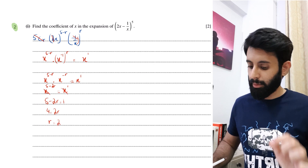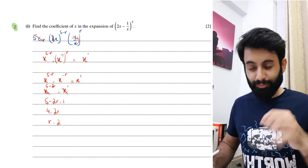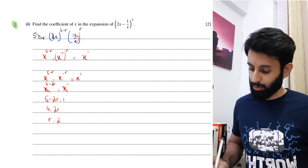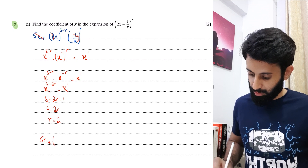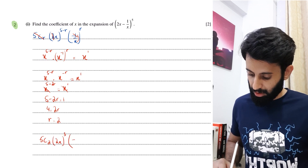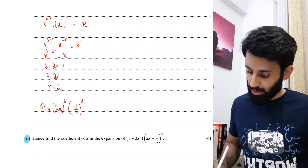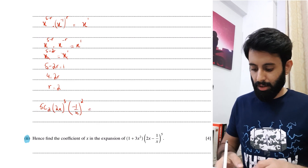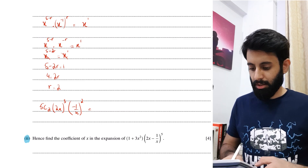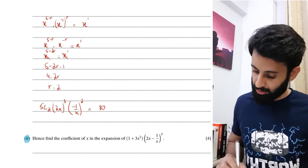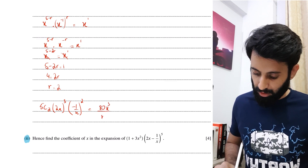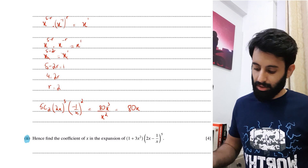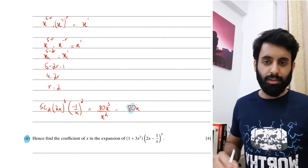Now don't get carried away — we still need to find the actual term. Plugging r = 2 into the formula: 5C2 · (2x)³ · (−1/x)². So 5C2 is 10, times 8, giving 80x³/x². Simplifying x³/x² = x, so the coefficient is indeed 80. Our final answer is 80.